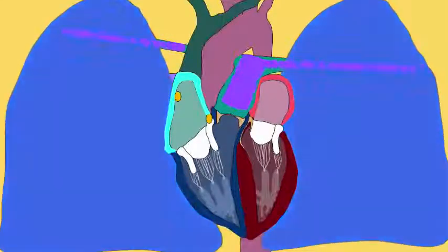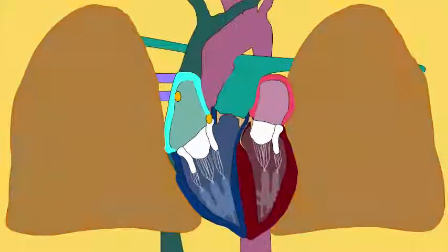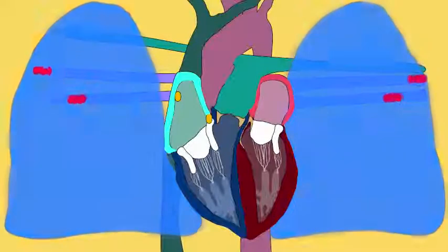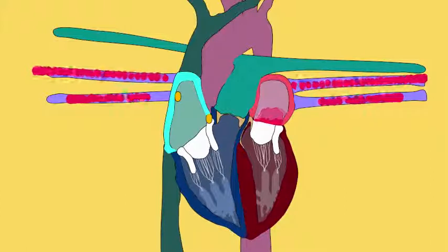In the lungs, gas exchange converts this into oxygenated blood, and red oxygenated blood then returns through pulmonary veins, two on the left and two on the right, into the left atrium.